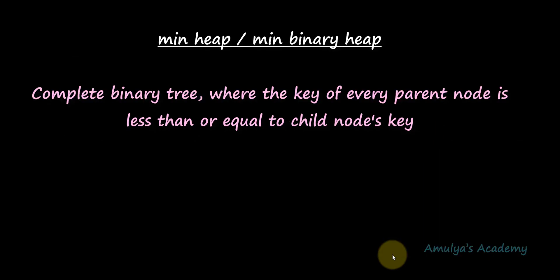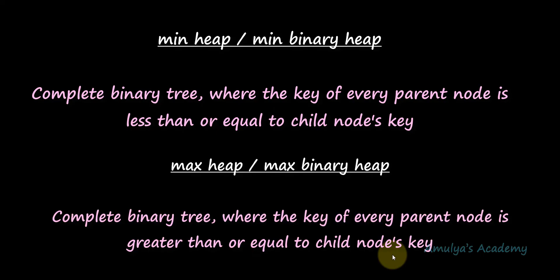If you have a complete binary tree where the key of every parent node is less than or equal to its child node, then that is called a min heap. If you have a complete binary tree where every parent node contains a key greater than or equal to the child node, then that is called a max heap. A binary heap is either a min heap or a max heap. In a min binary heap the key at the root must be the minimum among all keys, and this property must be recursively true for all nodes. In a max heap the key at the root is the maximum, and this same property must be recursively true for all nodes.